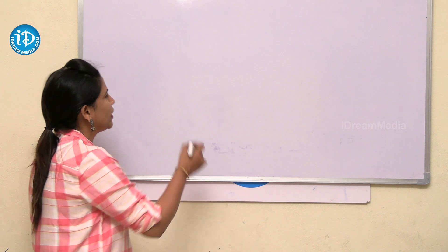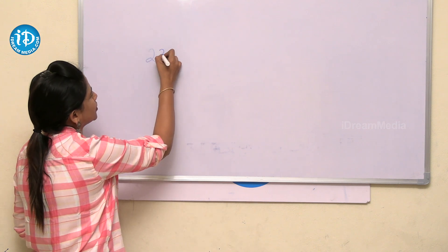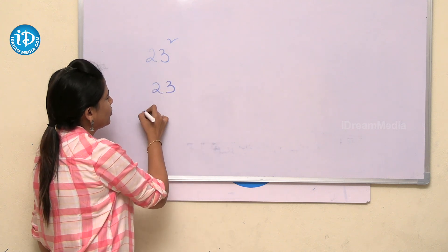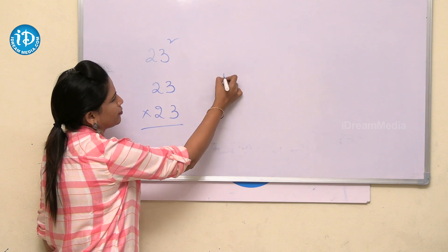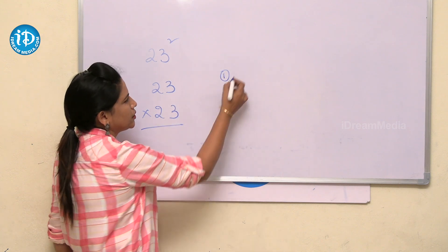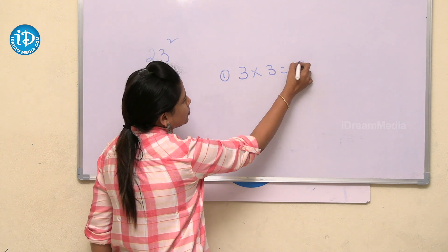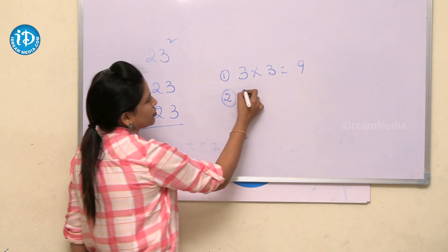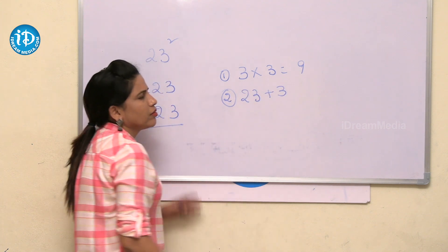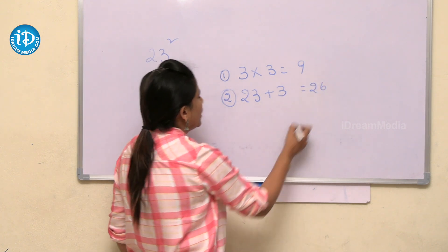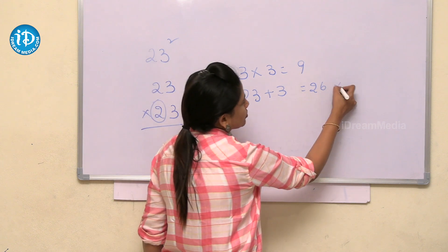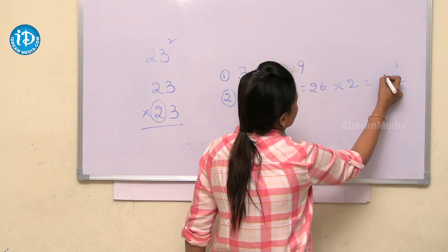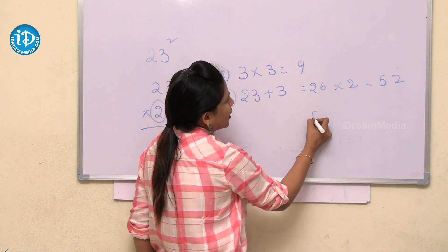We will do the next sum: 23 square, which is nothing but 23 into 23. The first step is the unit digit multiplication: 3 into 3 will become 9. In the second step, we add 23 plus 3 to get 26, then multiply into 2. This will become 529.